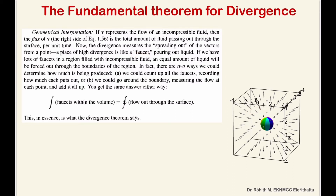There are two ways to think about this. We could count up all the faucets, recording how much each one puts out — that is, for each faucet, how much liquid is added. Or we could go around the boundary measuring the flow at each point. The integral of all the faucets within the volume is equal to the flow out through the surface.